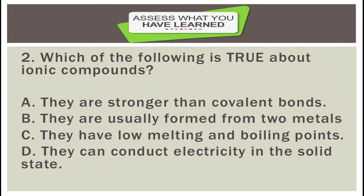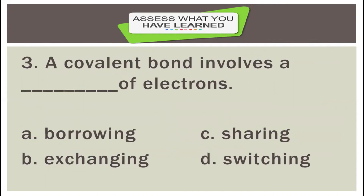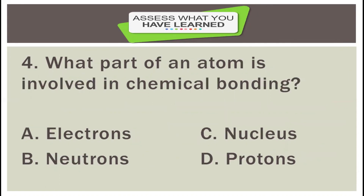Number two: which of the following is true about ionic compounds? A: they are stronger than covalent bonds; B: they are usually formed from two metals; C: they have low melting and boiling points; D: they can conduct electricity in a solid state. Number three: a covalent bond involves a blank of electrons — A: borrowing; B: exchanging; C: sharing; D: switching. Number four: what part of an atom is involved in chemical bonding? A: electrons; B: neutrons; C: nucleus; D: protons.